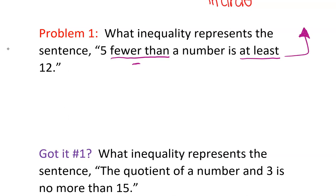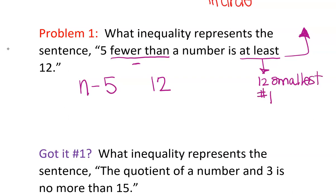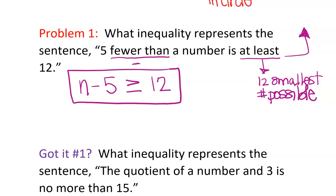When you're looking at a subtraction question, you have to pay attention to how it's written. 'Five fewer than a number' means five is being taken away from that number, which will be a variable. So it's going to be n minus five is at least 12. 'At least' means 12 is the smallest number possible, so it's going to be greater than or equal to 12. That's your inequality.